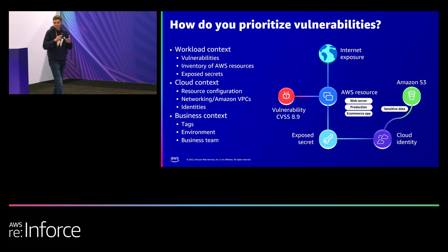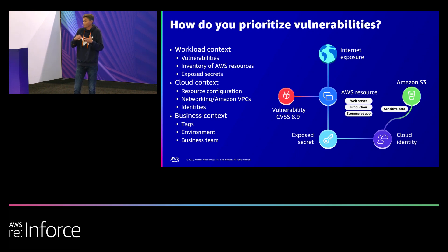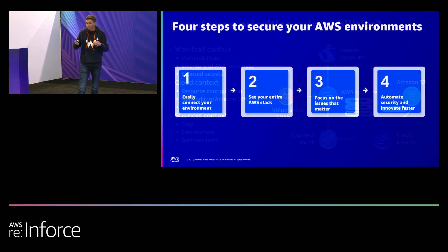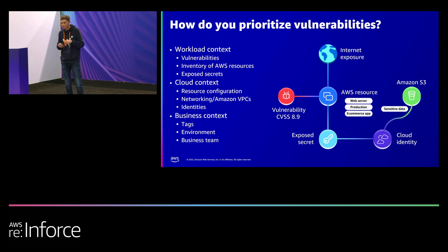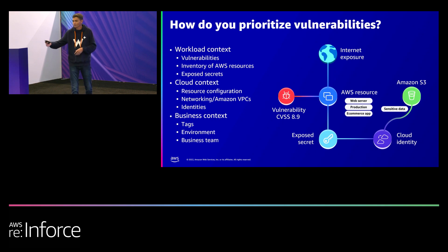It's all of this context across the workload, the cloud, and the business context — who owns that application, is it production, is it serving customer applications — that's really important to understand. With Wiz, we take all of that information and provide context as one notification, instead of multiple different alerts on vulnerabilities with varying CVSS scores or secrets like SSH or cloud access keys, where you're given no context other than 'you have an admin permission associated with a cloud access key, go investigate.' These are the problems we want to solve.